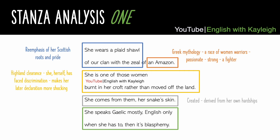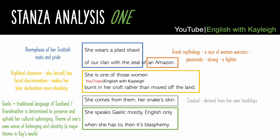'She comes from them, her snake skin' — 'comes from them' is quite important here; it almost creates the idea that she was created from that experience. Could it be that her own views and the way she acts have been very much derived from her own hardships? 'She speaks Gaelic mostly, English only when she has to, then it's blasphemy.' Gaelic is the traditional language of Scotland, so we get the idea that the grandmother is determined to preserve and uphold her cultural upbringing. This allows us to consider a major theme of Kay's work: one's own sense of belonging and identity, which is embedded throughout the poem and collection.